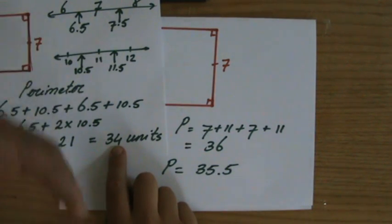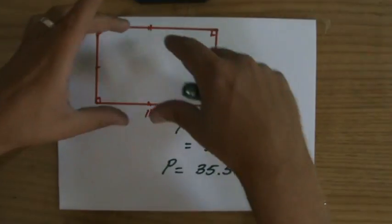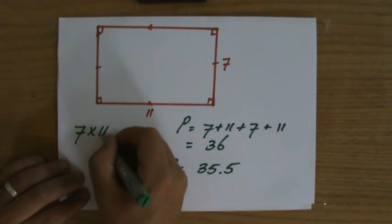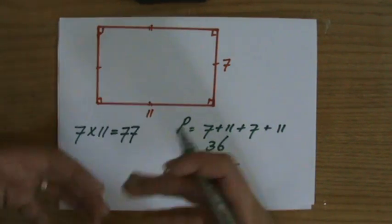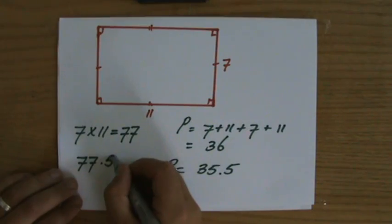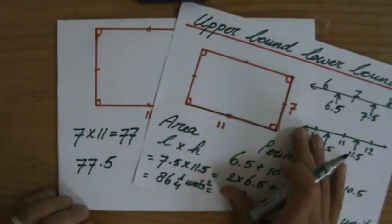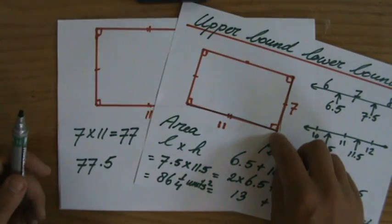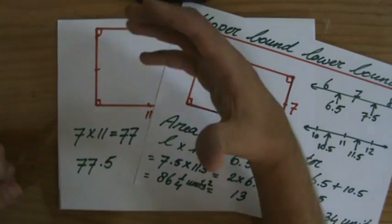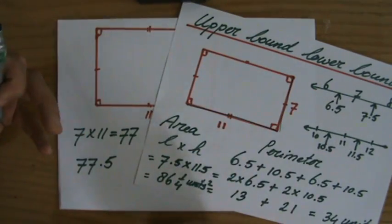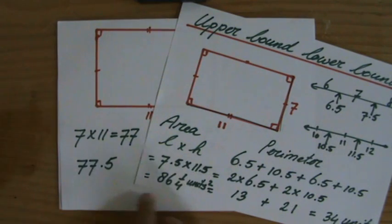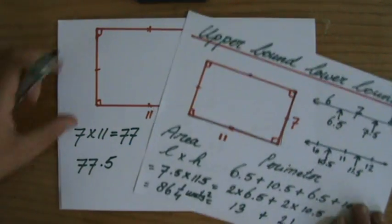Similarly for area: some students calculate seven times eleven equals seventy-seven and then take the upper bound, giving seventy-seven point five — which is wrong. You must first take the upper bound values, seven and a half and eleven and a half, then multiply: seven and a half times eleven and a half equals eighty-six and a quarter. That is your answer and stays your answer. Eighty-six and a quarter rather than seventy-seven point five, because that is absolutely wrong. Let's go to another video with another example — see you soon.